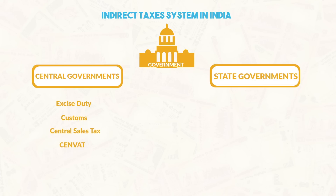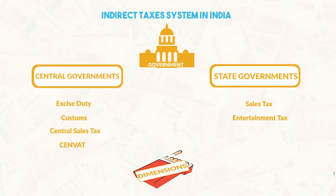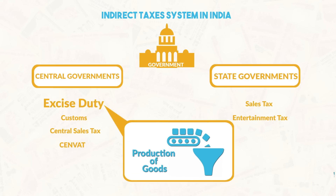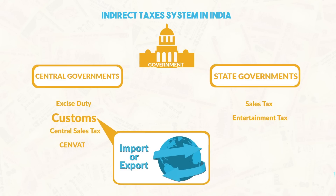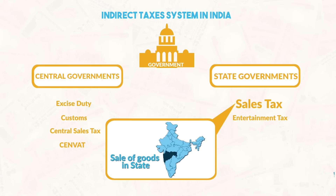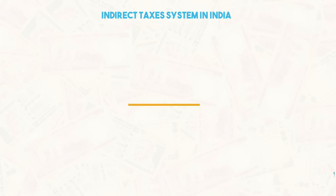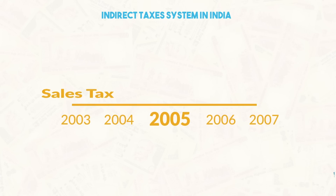State level indirect taxes include sales tax, entertainment tax, etc. Some goods are taxed according to their value, some according to their dimensions, and some according to their quantity. Excise duty is levied by the central government on production of goods. Custom duty is levied on goods meant for import and export. Sales tax is levied by the state government if the sale of goods occurs within the state. On interstate trade, the central government levies a Central Sales Tax or CST.